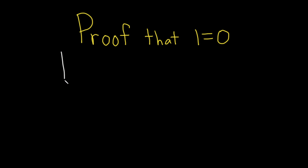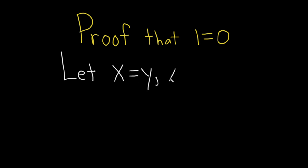So we'll start by letting x be equal to y. And if we like we can actually specify that they're nonzero. Just to add some more correctness to our bad proof, let's assume that x is not equal to zero. And so since x is equal to y, that means y is also not equal to zero.